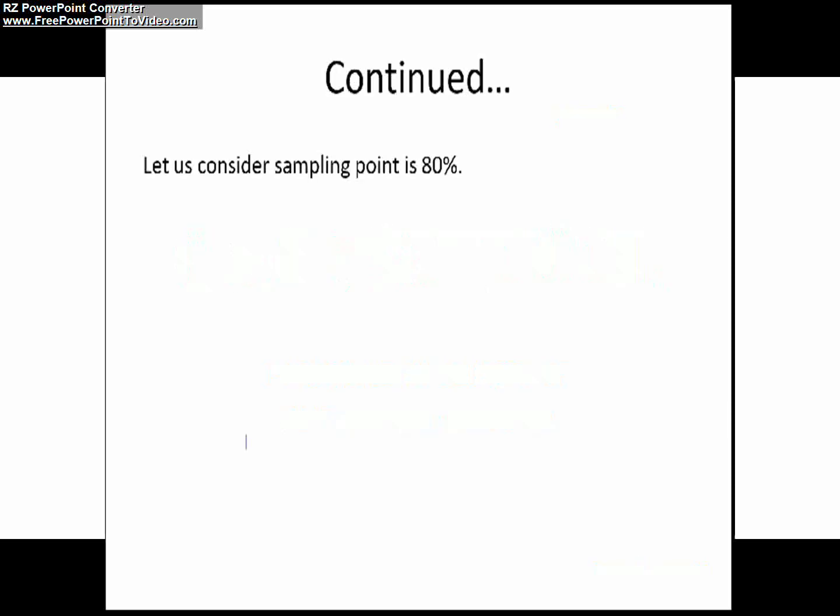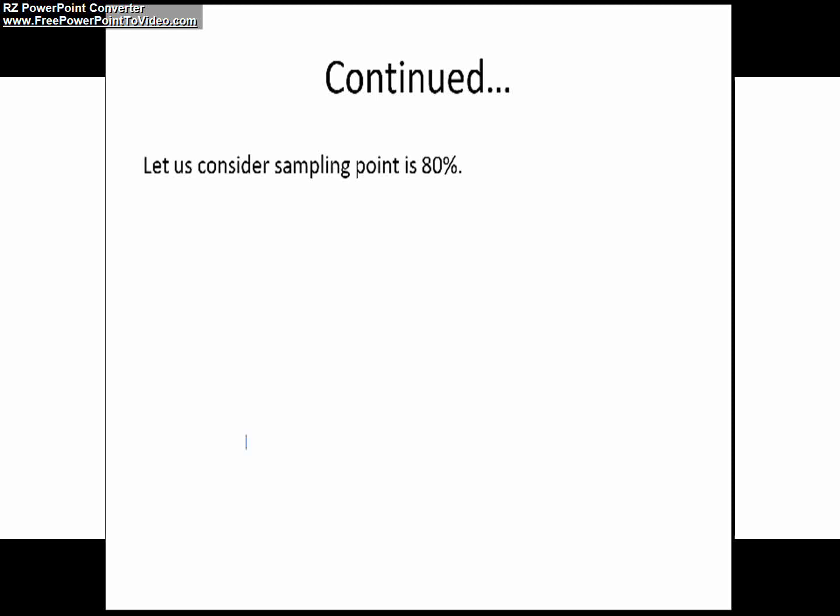Now we will understand how receiver interprets the incoming data legitimately. For example, we will consider the sampling point is 80% just for our understanding purpose.